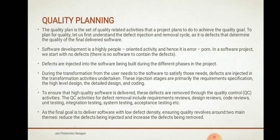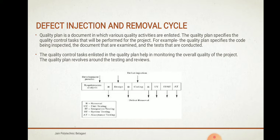Our final goal is to deliver software with low defect density, ensuring quality. This revolves around two themes: reduce the defects being injected, and increase the defects being removed. Quality planning is a document in which various quality activities are enlisted. The quality plan specifies the quality control tasks to be performed for the project — for example, the code to be inspected, the documents to be examined, and the tests to be conducted.